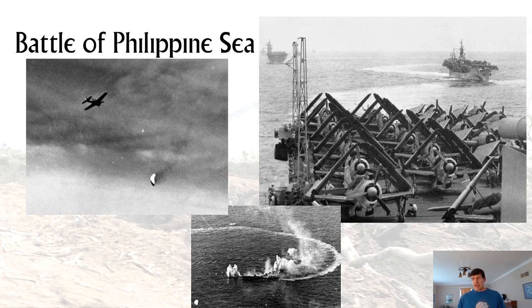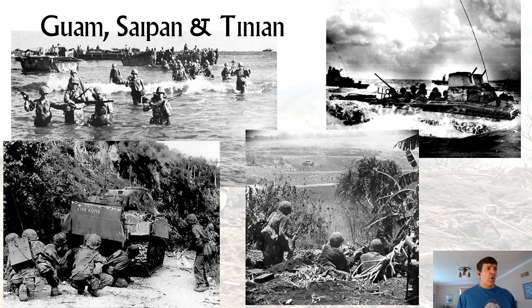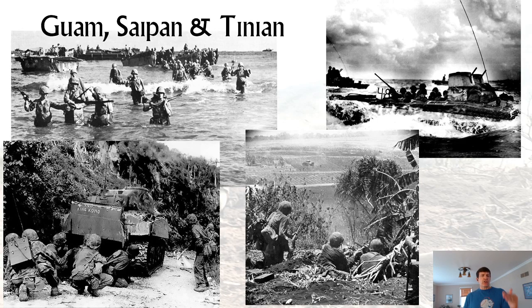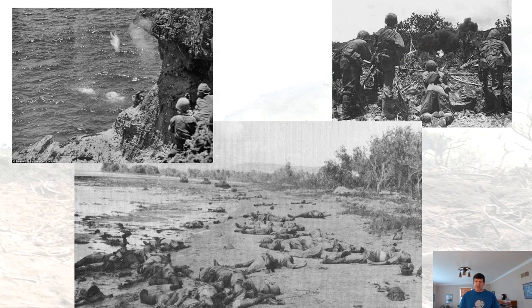The Japanese would never again have any kind of carrier-based air attack — they had a few carriers that survived but with virtually no planes. On Guam, Saipan, and Tinian the fighting was hellacious. The Japanese fought to the very death — Bushido — they would not surrender and held every position. Here are marines and soldiers fighting at Saipan. Marines had to use flamethrowers and high explosives called satchel charges to drive the Japanese out bunker by bunker.